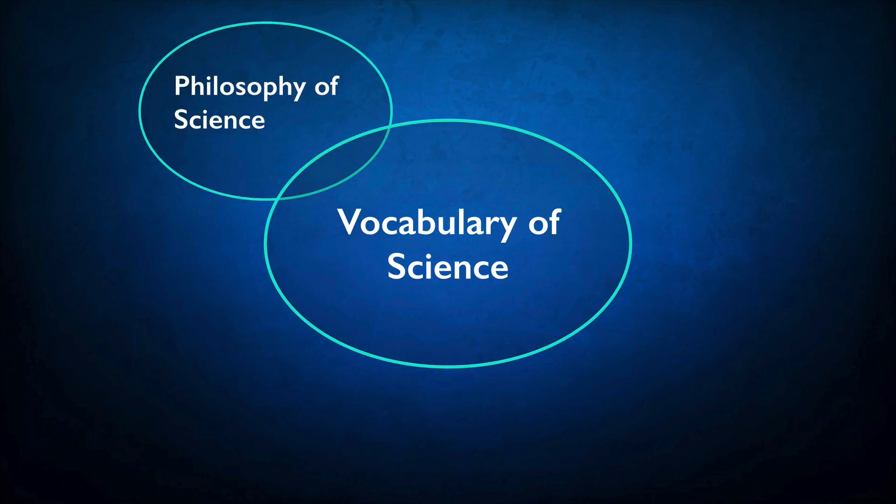This is not intended as a course in the philosophy of science, though we will cover some topics that would be covered in a philosophy of science course, like the problem of interpreting scientific theories and what it means to say that a theory or model is true or false. But if you're looking for a course on Karl Popper and Thomas Kuhn and other classical positions in the philosophy of science, that's not this course.